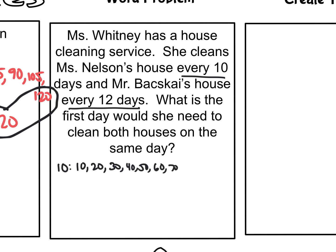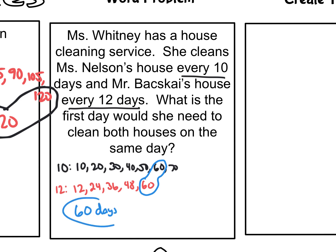Then I'm going to do the same thing with Mr. Basquey's house. I'm cleaning every 12 days, so I would start with day 12, day 24, day 36, day 48, day 60. At this point I can stop because I see that 60 is in both lists. So it would be 60 days before she would clean both houses on the same day — found just by simply making a list.